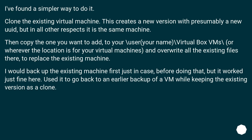A simpler way: clone the existing virtual machine, which creates a new version with a new UUID but otherwise the same machine. Then copy the VM you want to add into the VirtualBox VMs directory and overwrite all existing files there to replace the existing machine. Back up the existing machine first just in case. Used this to go back to an earlier backup of a VM while keeping the existing version as a clone.